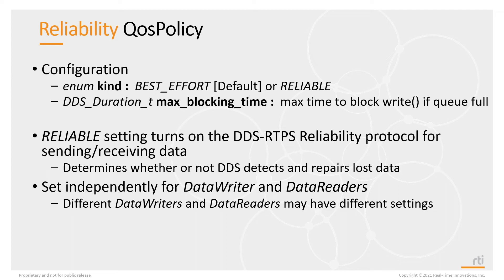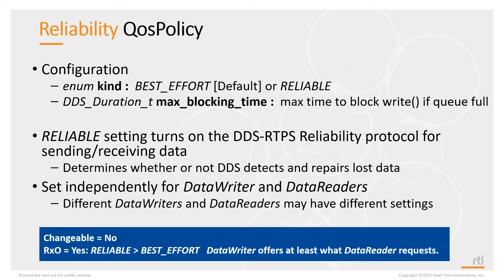You set the reliability QoS policy independently for data readers and data writers, so different endpoints may have different settings. However, the settings must be compatible — it follows an RxO contract because reliability is an end-to-end behavior. What the data writer offers must be at least what the data reader requests. A reliable data writer can service both best effort and reliable data readers, but a best effort data writer can only service best effort data readers.